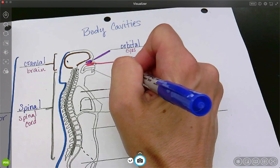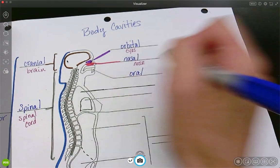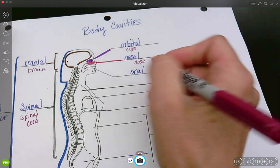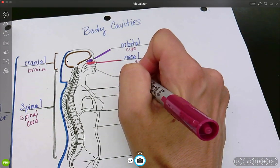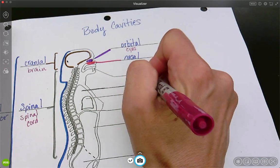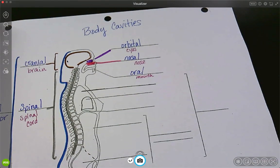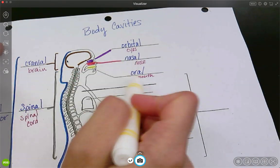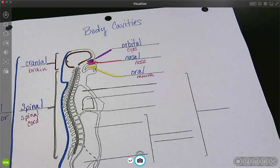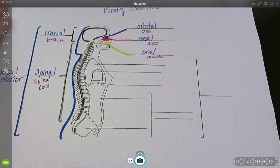Next region. Oral. So take a pill orally, you put it in your mouth. And we'll pick a color for that and color in our mouth. All right.